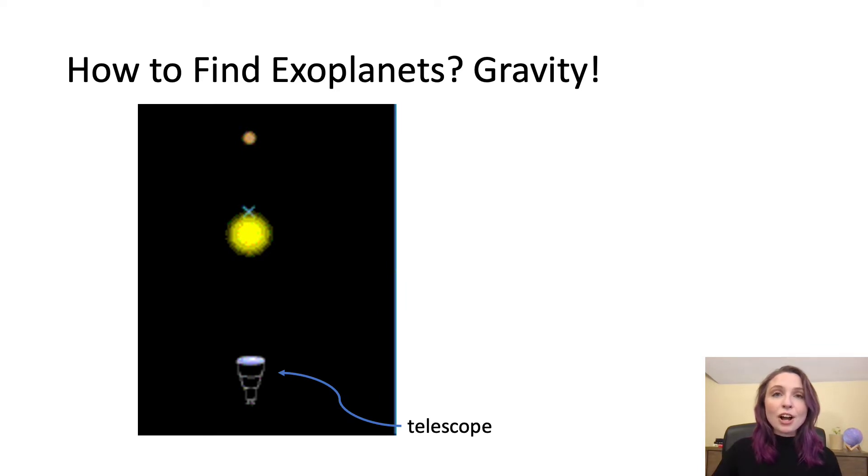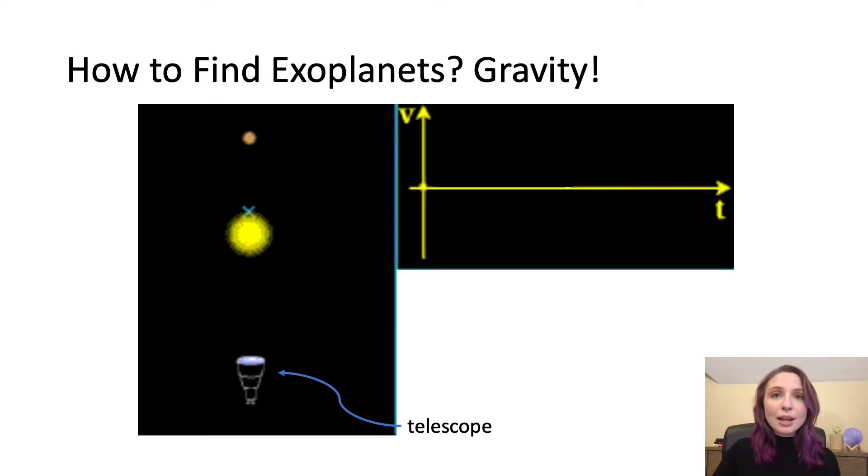Let's take a minute to talk about how these measurements might look. We're going to look at a graph that has time on the x-axis and speed or velocity of the star on the y-axis. Now remember, we can't see the exoplanet. So these white dots are showing us the velocity of the star every time an astronomer looked at it with their telescope.